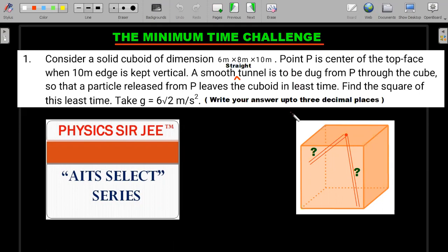So please try to read the question and give it an attempt for two or three minutes and do come back for the concept and solution explanation. So here we go. Consider a solid cuboid of dimension 6m × 8m × 10m. Point P is center of the top face here when 10 meter edge is kept vertical.